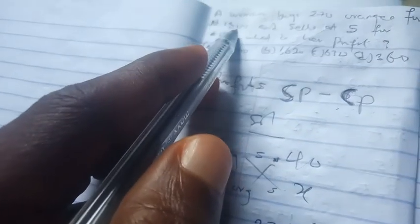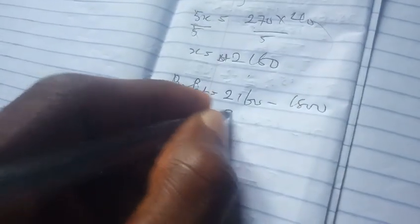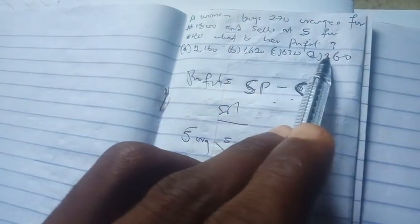Therefore, profit will be the selling price minus the cost price. The cost price is 1,800. Therefore, profit will be 2,160 minus 1,800. So therefore the final answer will be 360 naira. This is our profit, which is option D.